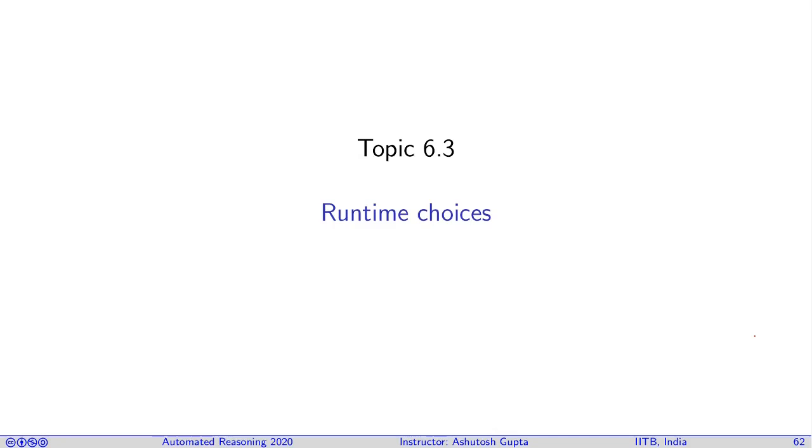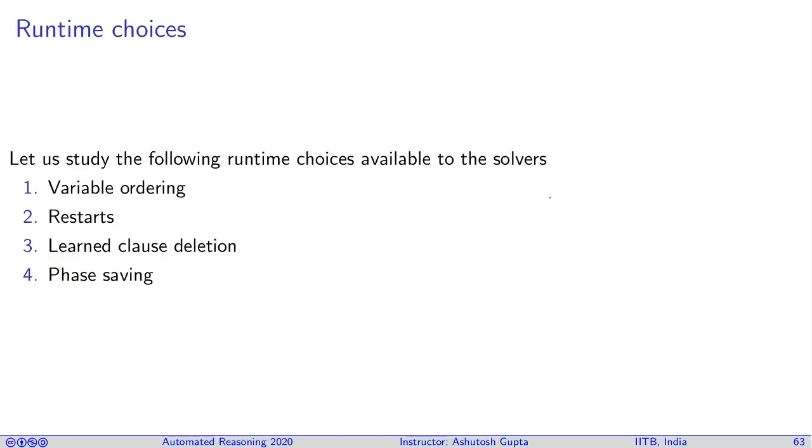Let us look at a few more optimizations in a SAT solver, and these optimizations I would call them in different classes called random choices. In any kind of search of satisfiable solutions, you often ask several questions.